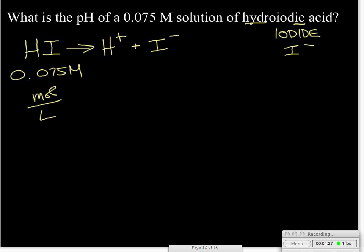For every mole that we put in of the HI, we're going to get one mole of the hydrogen ion. Think of this as a ratio saying we're going to get one mole of the hydrogen ion for every one mole of HI, which means that the molarity of our hydrogen ion here is 0.075 molar. That's our concentration.